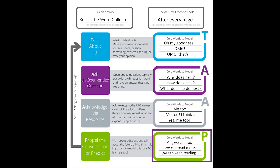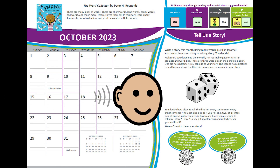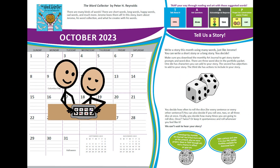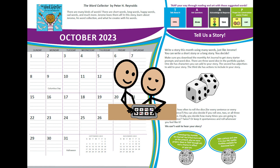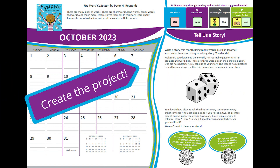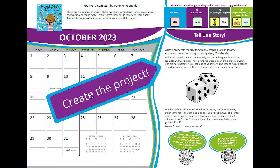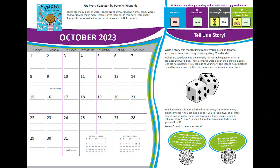Finally, you propel the activity forward or predict. We suggest you model the words WE and CAN. You could say, yes, we can too. We can read more. We can keep reading. Enjoy simply listening to the story or tap your way through, demonstrating words and locations for the AAC learner on their technology. Find other words that are interesting to the AAC learner and use these words in other activities. Join us as we read about Jerome and what he creates with his words.